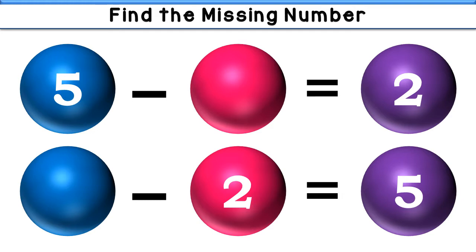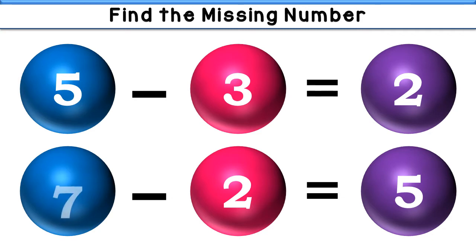The number is 3. 5 minus 3 is equal to 2. Next: what minus 2 is equal to 5? The answer is 7. 7 minus 2 is equal to 5.